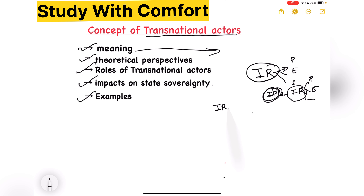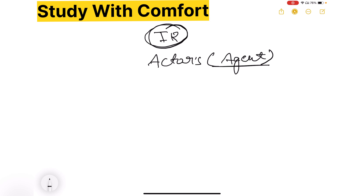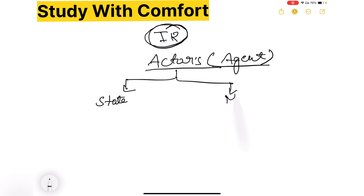तो जब हम international relation पढ़ रहे हैं, उसमें international politics भी है, international economic relation भी है, international cultural relation भी है। अब हम बात कर रहे हैं transnational actors की। Actors का मतलब क्या होता है? International relation में कई तरीके के actors होते हैं। Broad categorization दो की जाती है — एक होते हैं state actors, दूसरे होते हैं non-state actors।